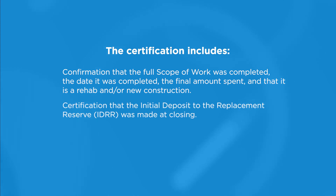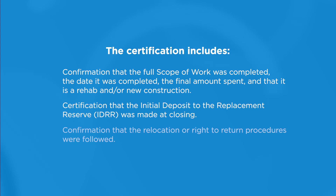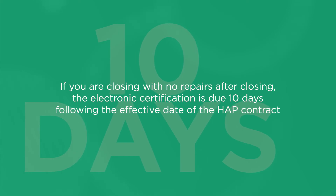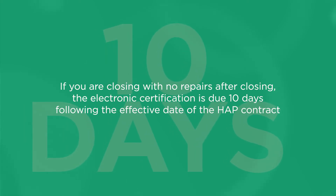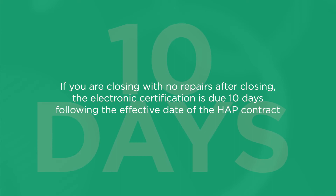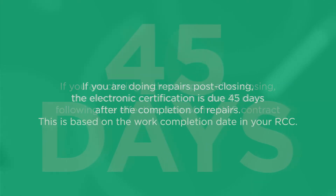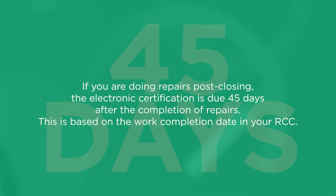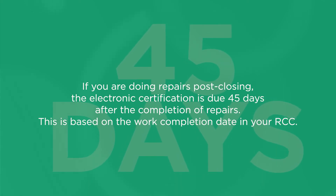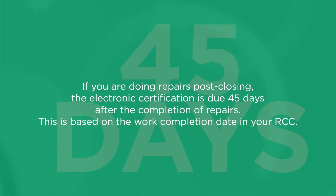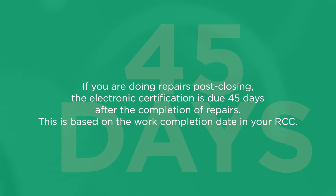The certification also includes: certification that the initial deposit to the replacement reserve was made at closing; confirmation that the relocation or right-to-return procedures were followed; and Section 3 reporting information. If you are closing with no repairs after closing, the electronic certification is due 10 days following the effective date of the HAP contract. If you are doing repairs post-closing, the electronic certification is due 45 days after the completion of repairs, based on the work completion date in your RCC.